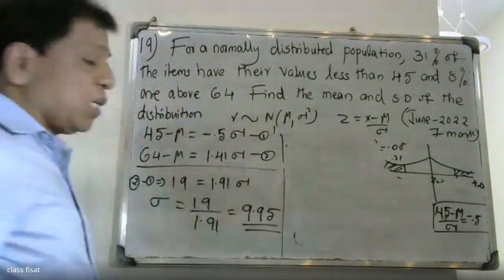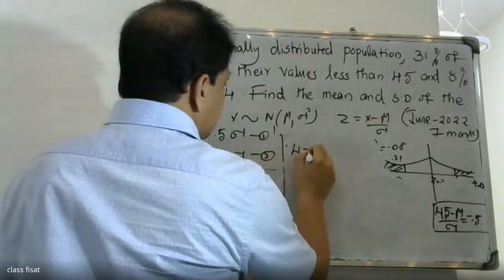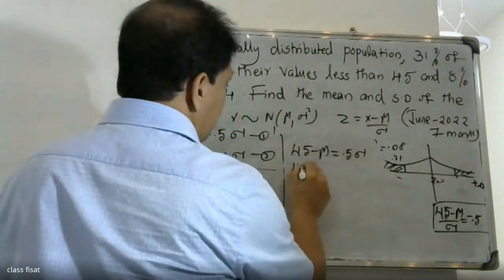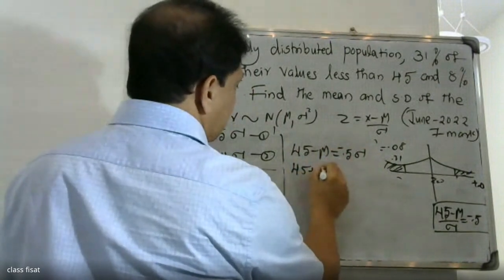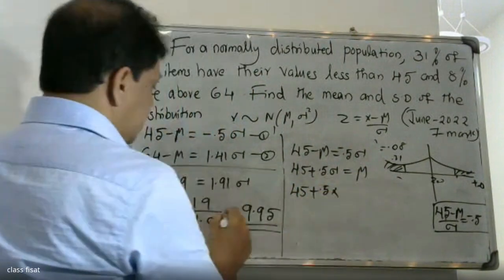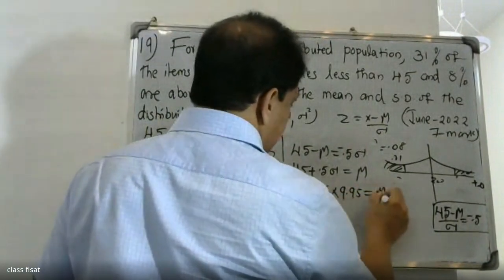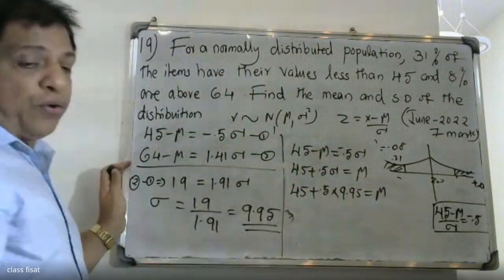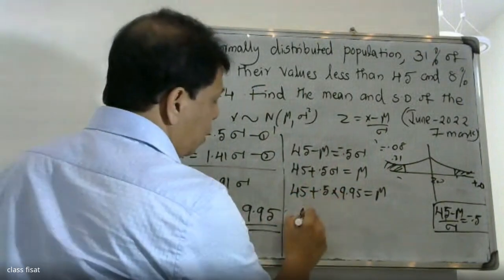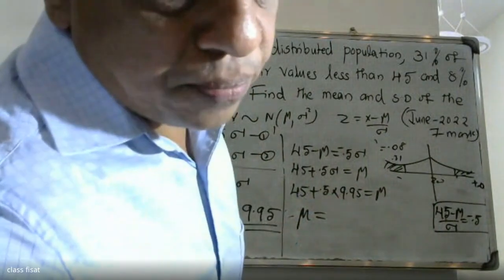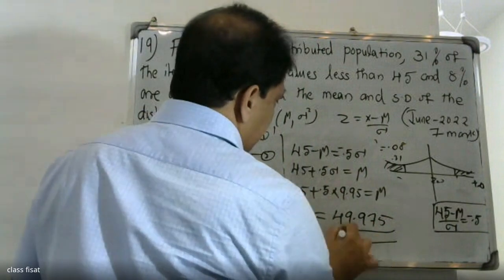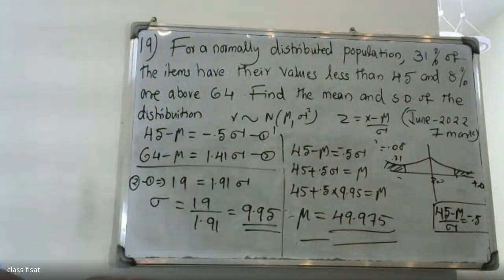To find μ, substitute σ = 9.95 into the first equation: 45 - μ = -0.5 × σ, so μ = 45 + 0.5 × 9.95. Therefore μ = 45 + 4.975 = 49.975. The mean is approximately 49.97.